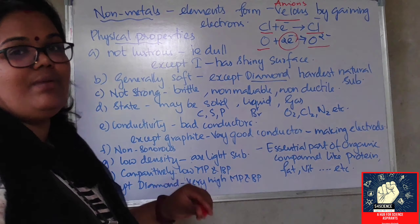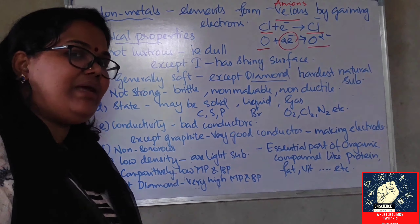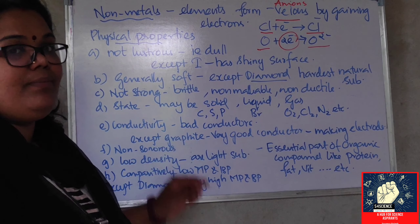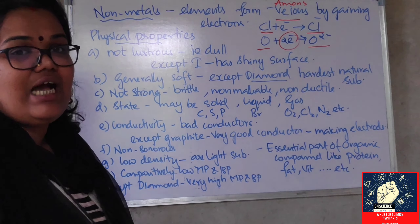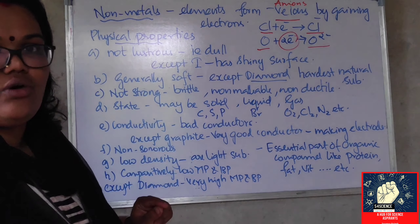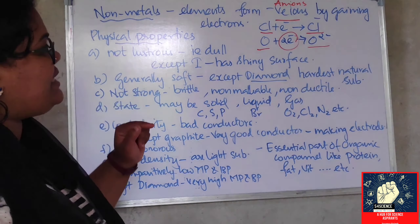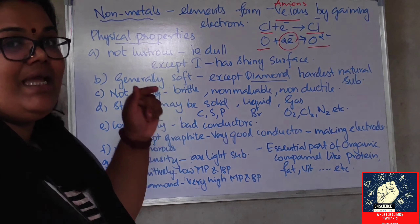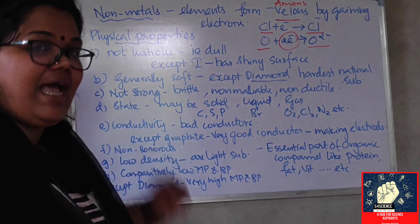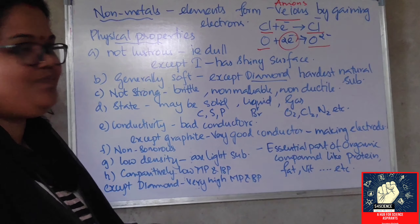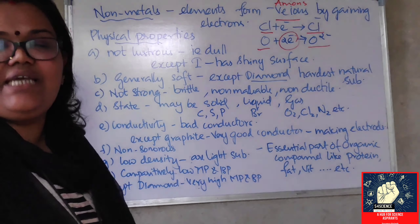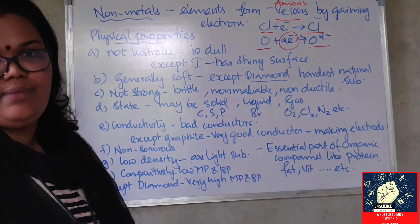So I hope you understand what we mean by a nonmetal. Metals will form positively charged ions called cations by losing electrons. Nonmetals will form negatively charged ions or anions by gaining electrons. Now what are the physical properties of nonmetals?